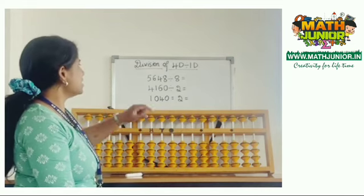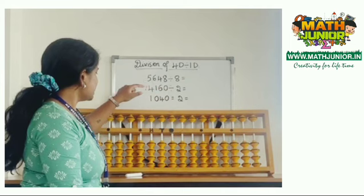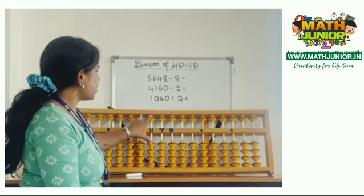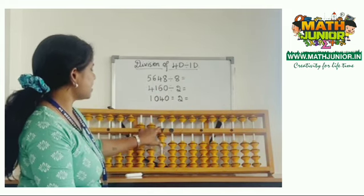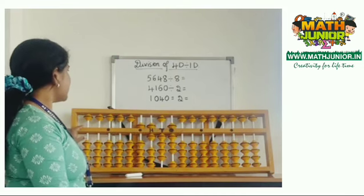The first example is 5,648 divided by 8. Place 5,648 using the thousands and hundreds in their place. Then skip forward and place 8.